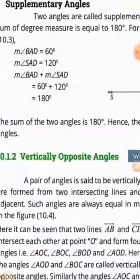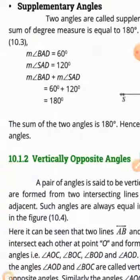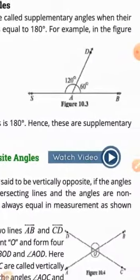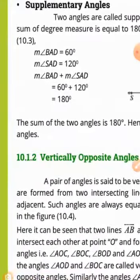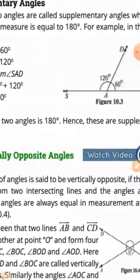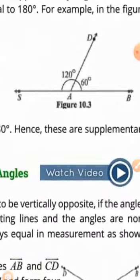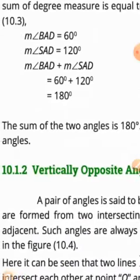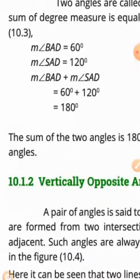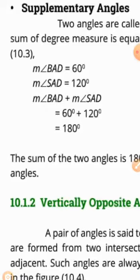When the answer is 180 degrees, the angles are on opposite sides of the same vertex. Two angles are called supplementary angles when their sum of degree measure is equal to 180 degrees. For example, angle SAD is 120 degrees and angle BAD is 60 degrees — if you add both, it will be 180 degrees. So these are supplementary angles.